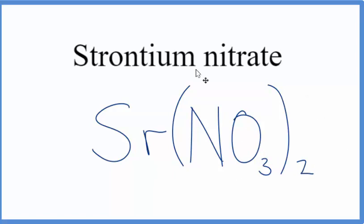So you can think of this as a strontium ion, Sr2+, and two separate nitrate ions. Each one has a 1-. Together, those charges add up to zero.